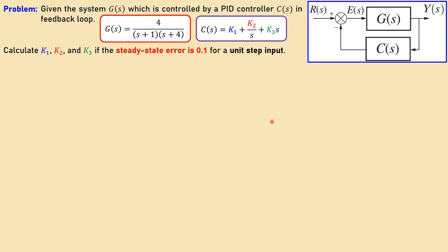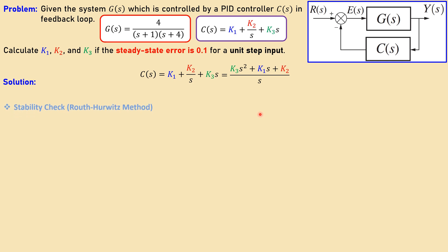Let's check what we can achieve in this configuration. We start with the solution by rewriting the PID controller as a single fraction, which will be helpful later on. Taking all terms together you get a second-order numerator and a denominator which is just a pure s — meaning a pole at the origin.